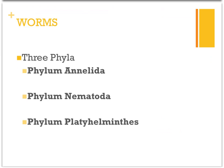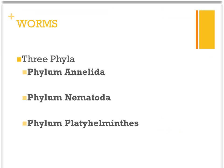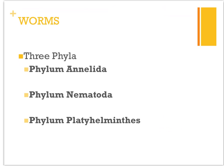Let's talk about worms first. There are three phyla of worms you should know: Phylum Annelida, Phylum Nematoda, and Phylum Platyhelminthes. Your annelids are your segmented worms, your nematodes are your roundworms, and your platyhelminthes are your flatworms.